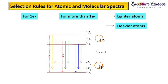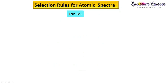Hello everyone, welcome back to Spectrum Classes. Today in this video, I am going to discuss the selection rules for atomic and molecular spectra. We are going to discuss first for one electron systems and for more than one electron systems. For more than one electron systems, we have two different cases: one for lighter atoms and one for heavier atoms. So let's start with the selection rules for atomic spectra.